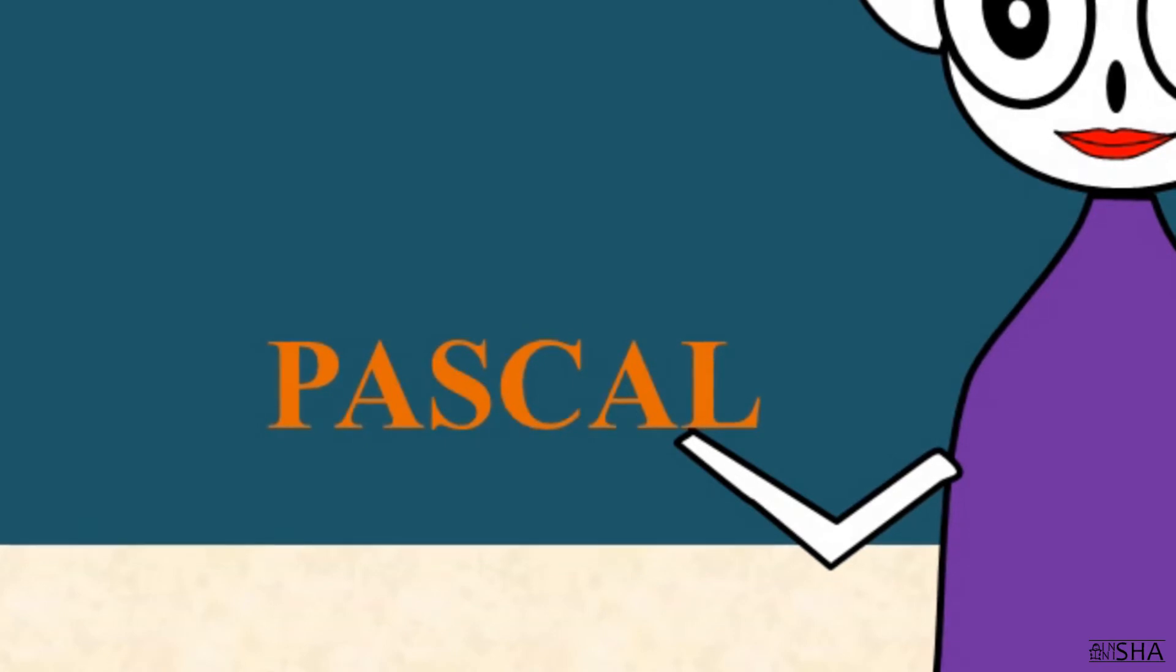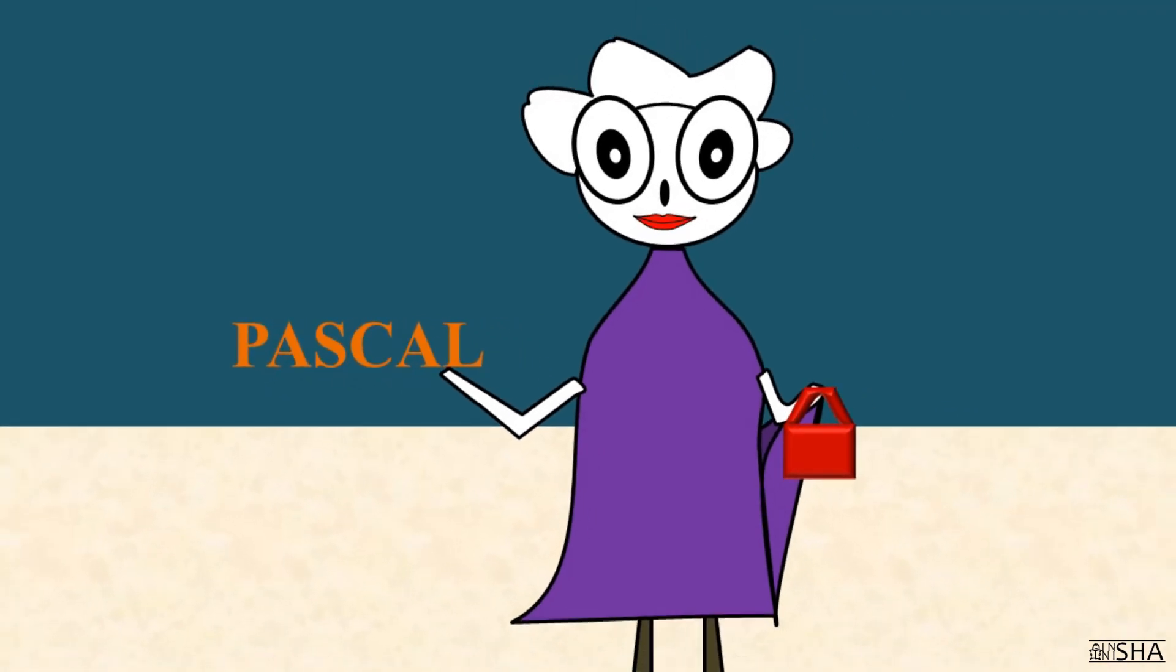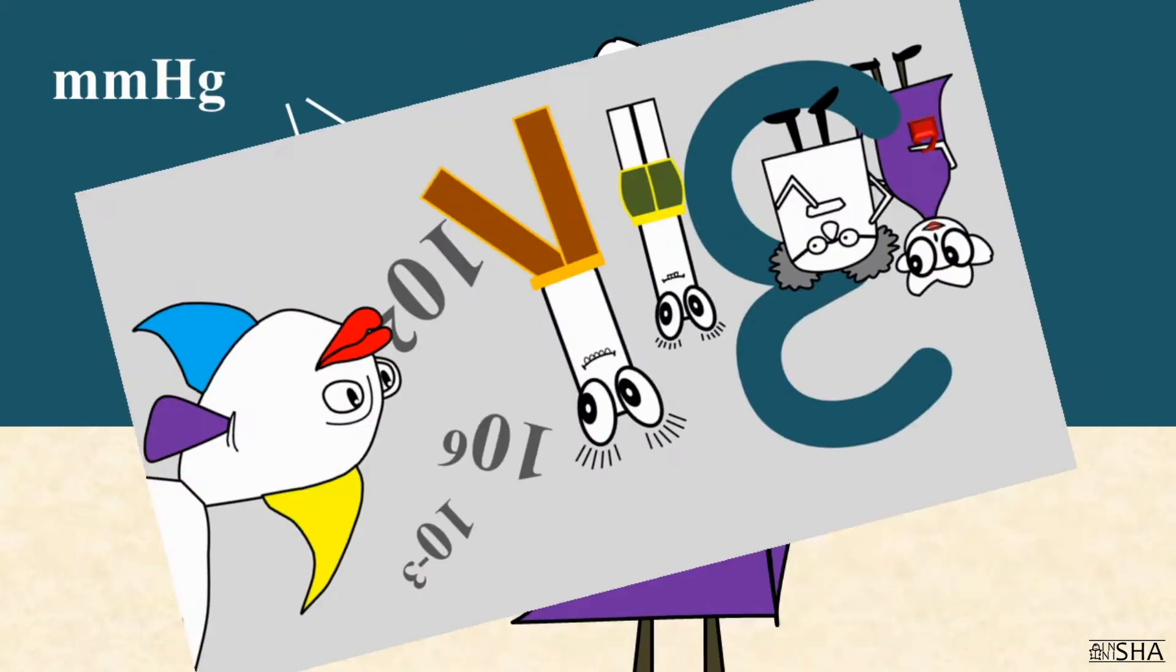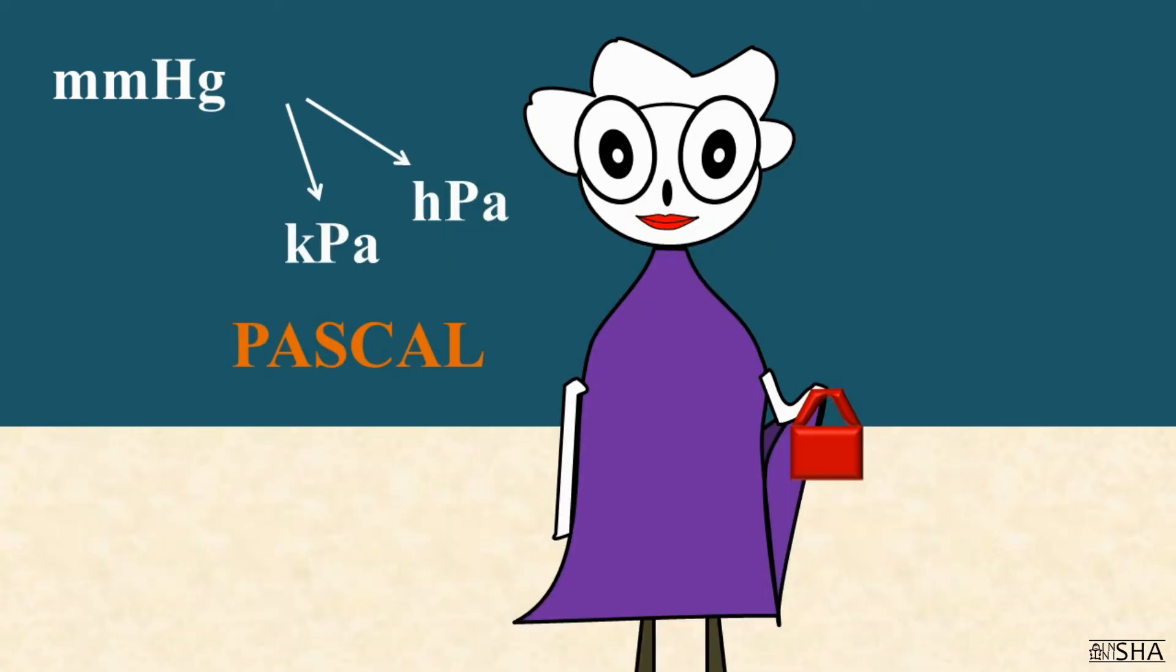However, there are often tasks where you need to convert to non-SI units. You may be asked to convert millimeters of mercury to hecto- or kilopascals. If you have any problems doing this, we advise you to watch the third episode of this course. It tells about converting units to the SI system and vice versa.